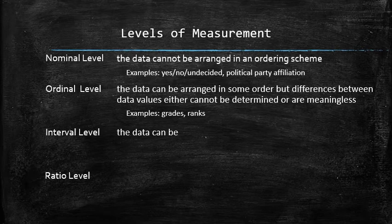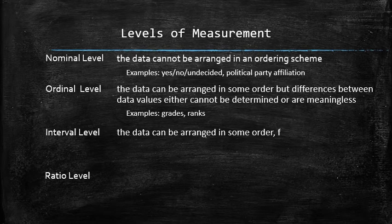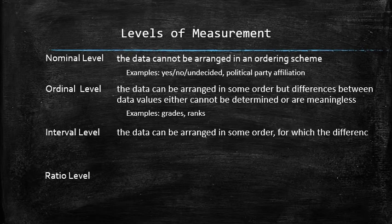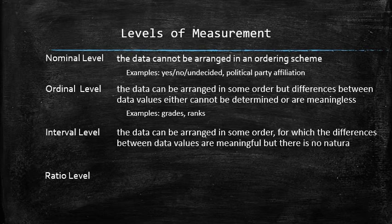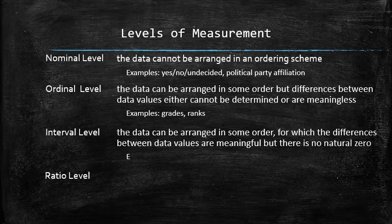The interval level is when the data can be arranged in some order for which the differences between data values are meaningful, but there is no natural zero. For example, temperature and years.